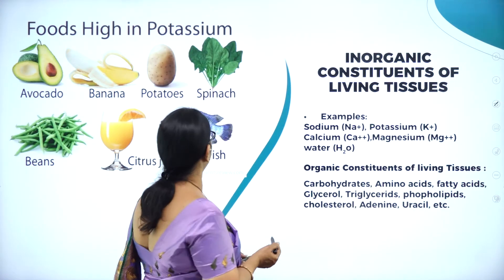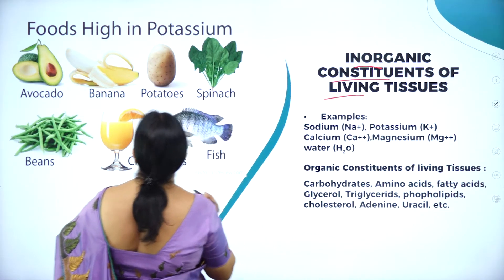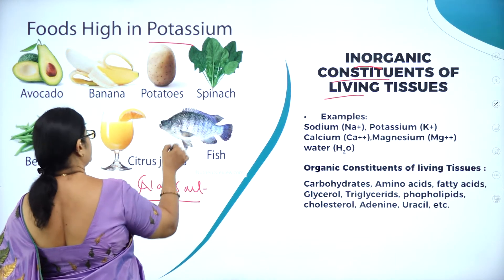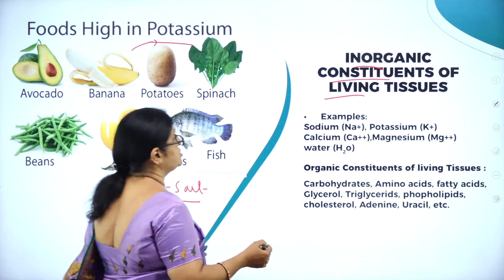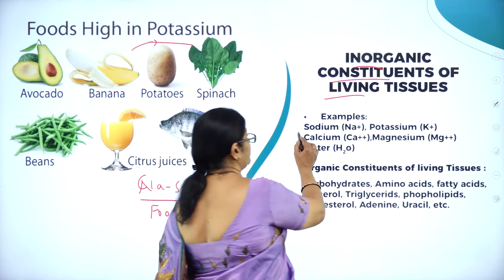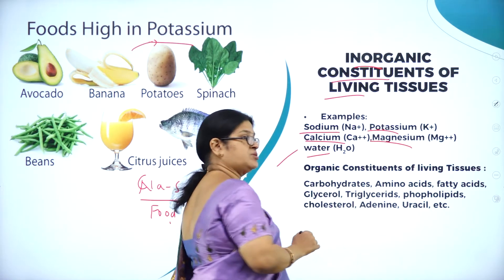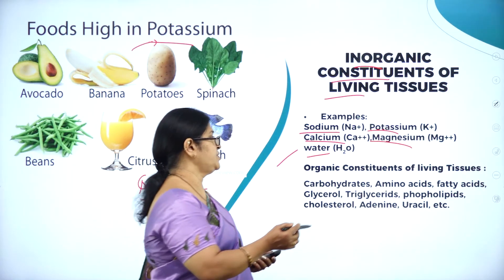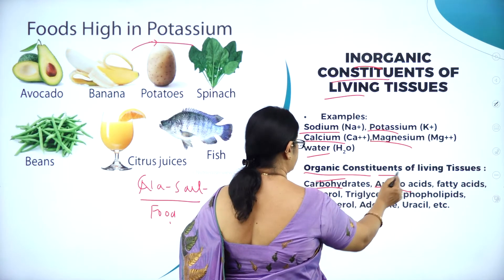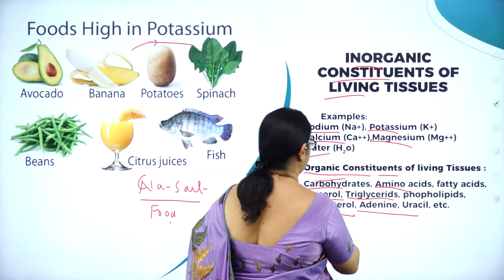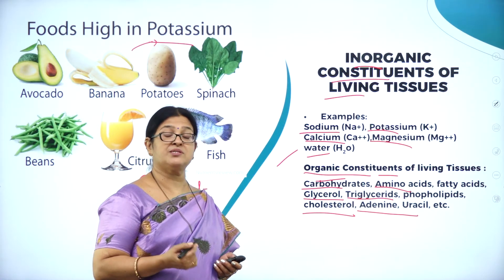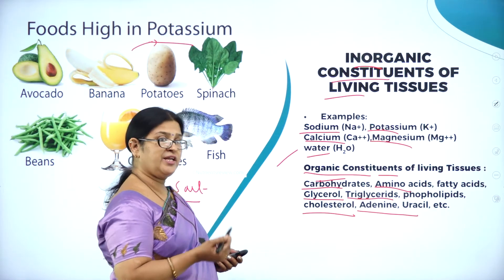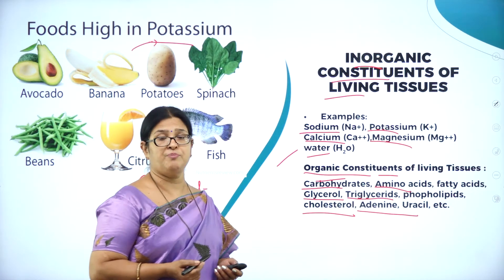Inorganic constituents of living tissues include sodium, potassium, calcium, magnesium, and water — these are very important minerals. Organic constituents include carbohydrates, proteins, fatty acids, glycerol, triglycerides, phospholipids, and cholesterol. For example, the cell wall in plant cells is made up of a carbohydrate polysaccharide. All these organic compounds are very important for various processes of cell formation and function.